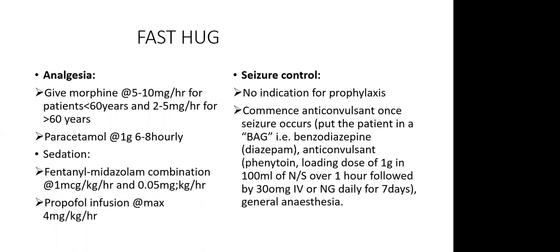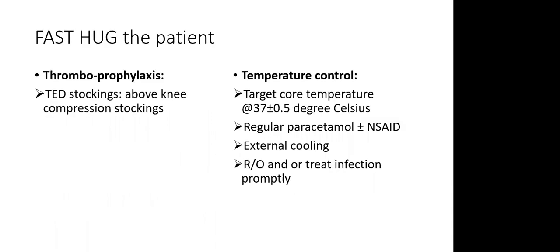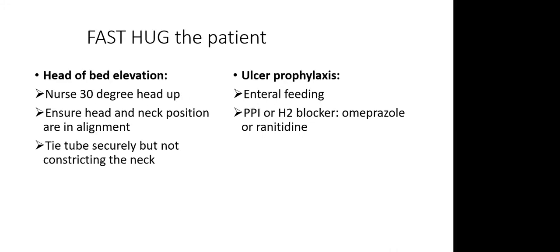For DVT prophylaxis, use thrombo-embolic deterrent stockings — compression stockings that must be above knee, not just below knee. Ensure temperature control — hyperthermia is not good for this patient. Maintain a core temperature of 37 ± 0.5°C. Use regular paracetamol as antipyretic. There is some controversy about NSAIDs regarding bleeding and renal compromise, but when patients are adequately fluid resuscitated the risk of acute kidney injury is minimal. Use external cooling and treat infection promptly.